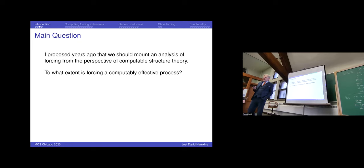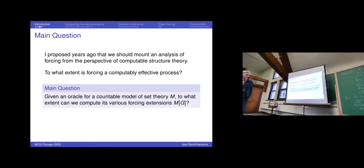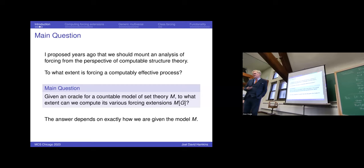To make it more precise: given an oracle for a countable model of set theory M, to what extent can we compute its various forcing extensions, given a generic filter G, to produce oracles for those forcing extension models? The answer is going to depend on exactly how we're given the model M, how much of it we're given, what part of its diagram we're given, and so on.